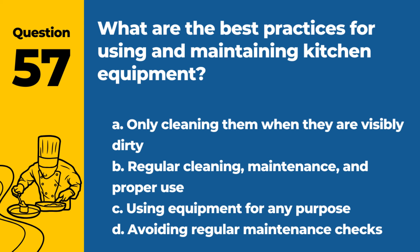Question 57. What are the best practices for using and maintaining kitchen equipment? a. Only cleaning them when they are visibly dirty. b. Regular cleaning, maintenance, and proper use. c. Using equipment for any purpose. d. Avoiding regular maintenance checks. Answer: b. Regular cleaning, maintenance, and proper use. Proper care of kitchen equipment is essential for food safety and efficiency.